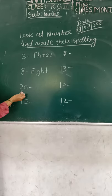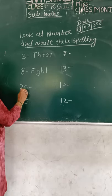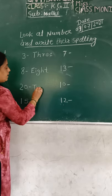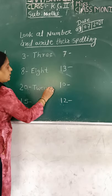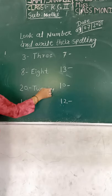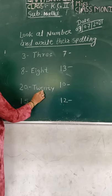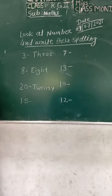Now, two-zero, twenty. Very good. Twenty. Twenty spelling: T-W-E-N-T-Y. Twenty. T-W-E-N-T-Y. Twenty. Okay?